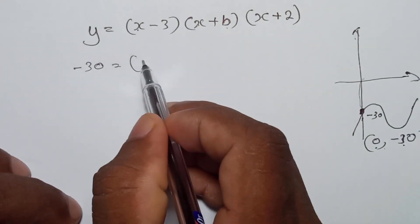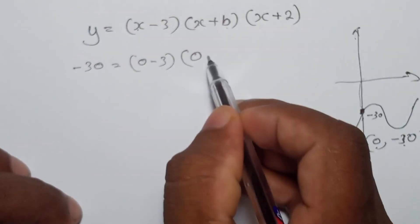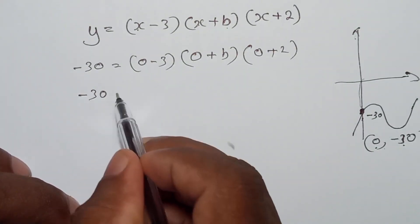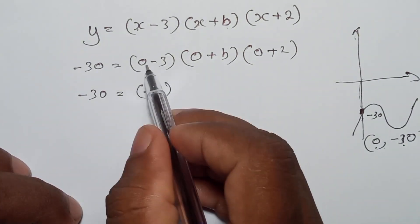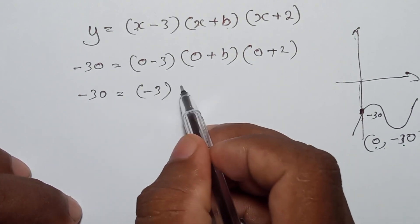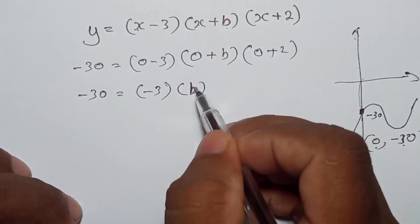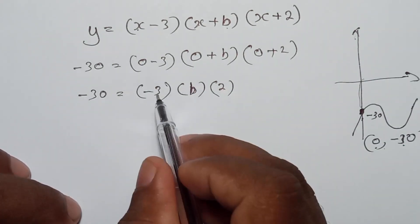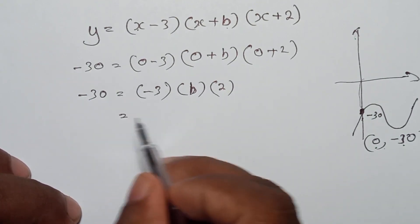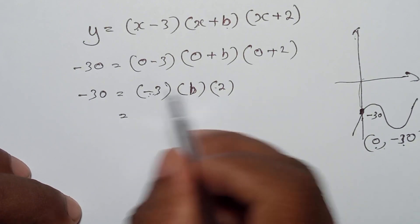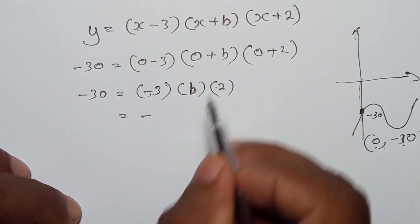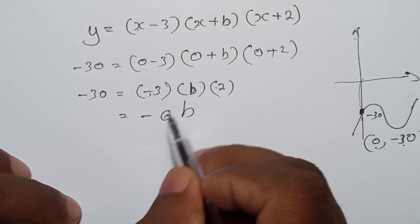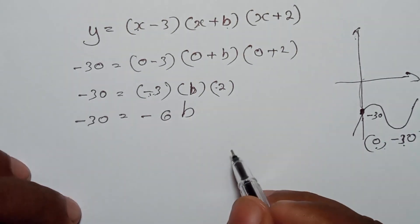Replace y with minus 30 and x with 0. Substituting: the bracket gives (0 minus 3) which is minus 3, and the other bracket gives (0 plus b) which is just b, then plus 2. So we get minus 3 into b, and minus 3 into 2 equals minus 6. Minus into plus gives minus, so minus 3 times 2 is minus 6. This gives us minus 6b equals minus 30.